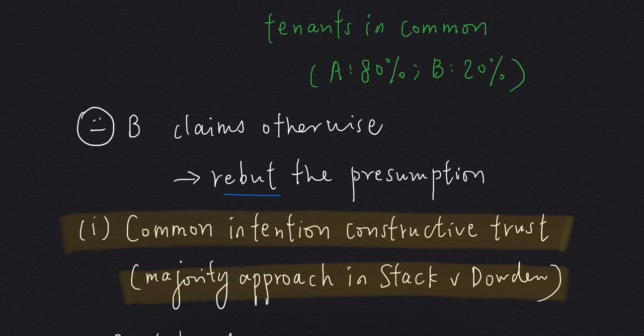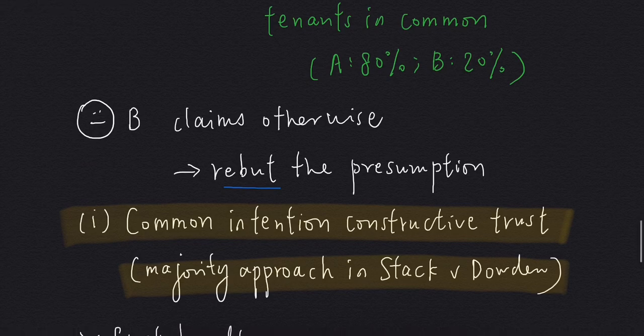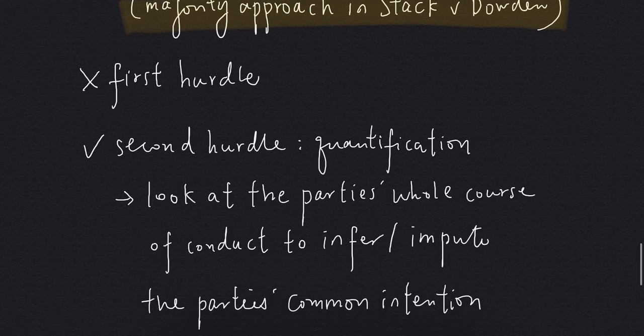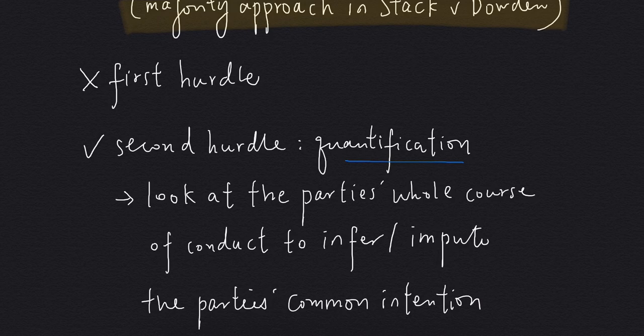The first approach is to establish the common intention constructive trust. This time, B does not have to overcome the first hurdle — it has been automatically overcome because the property has been conveyed in joint names. But B has to overcome the second hurdle, which concerns quantification of the beneficial interest. So we look at the parties' whole course of conduct to infer or impute their common intention with respect to the quantity of each of their shares.